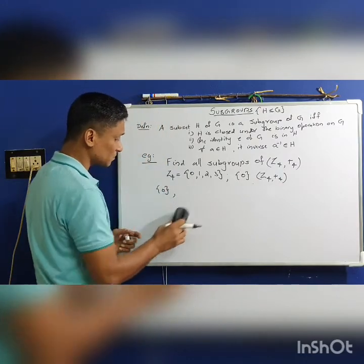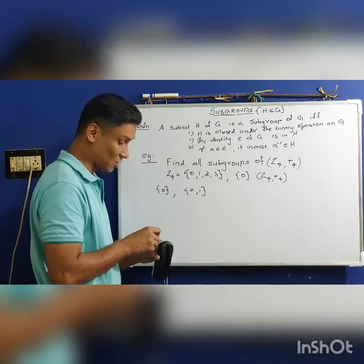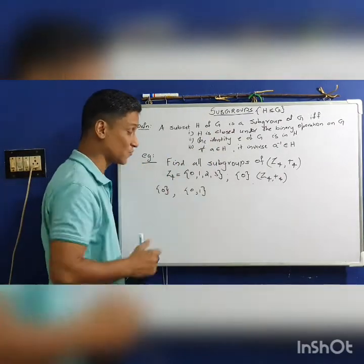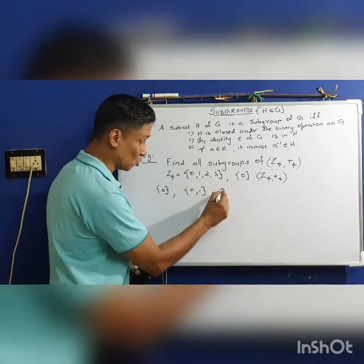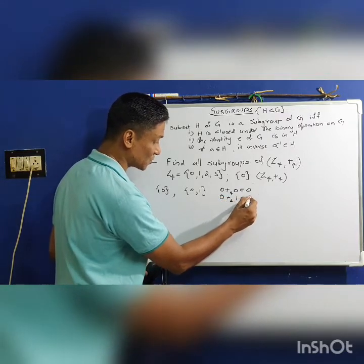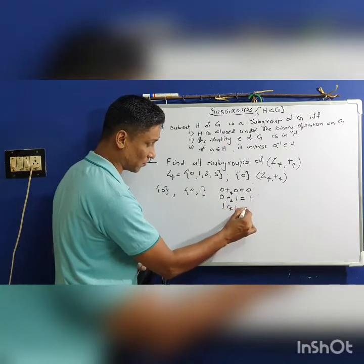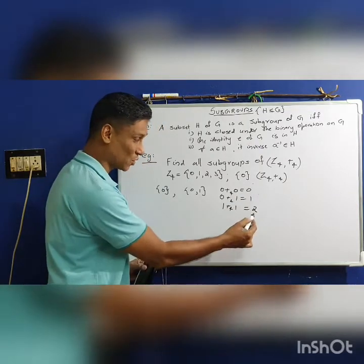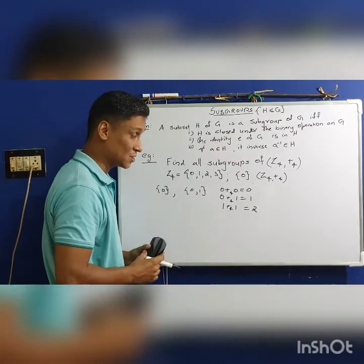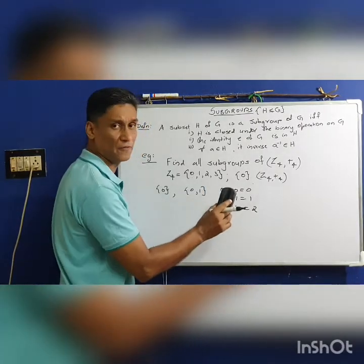Now we have 2-element subsets. The first 2-element subset is {0, 1}. The closure property — this first property is violated, hence this is not a subgroup of Z4.